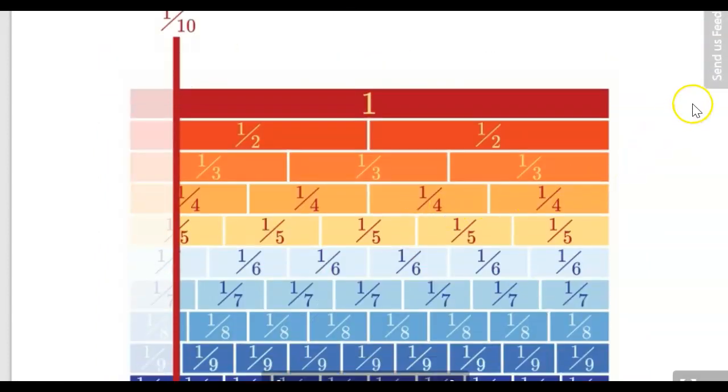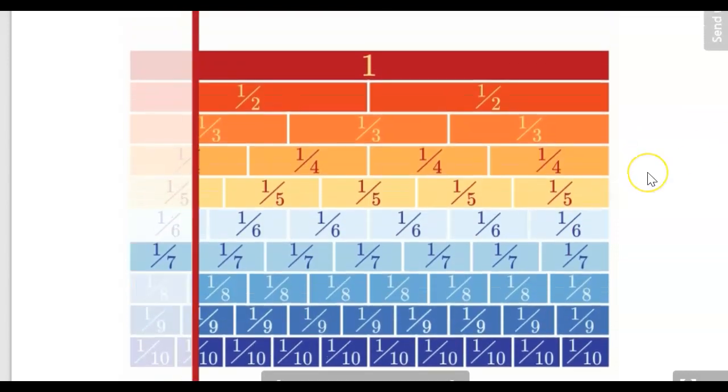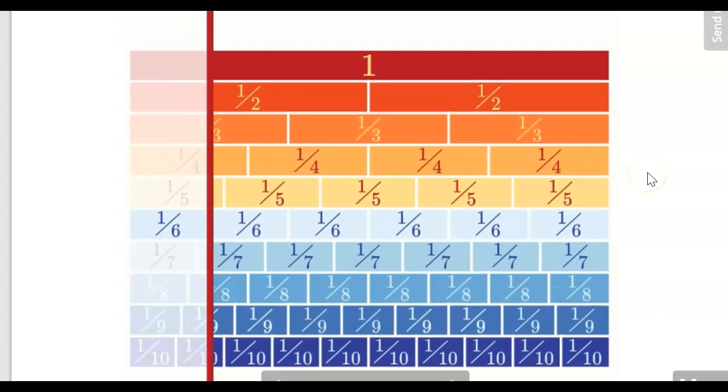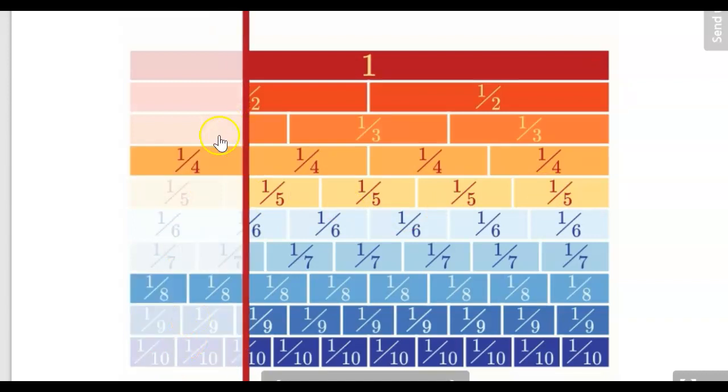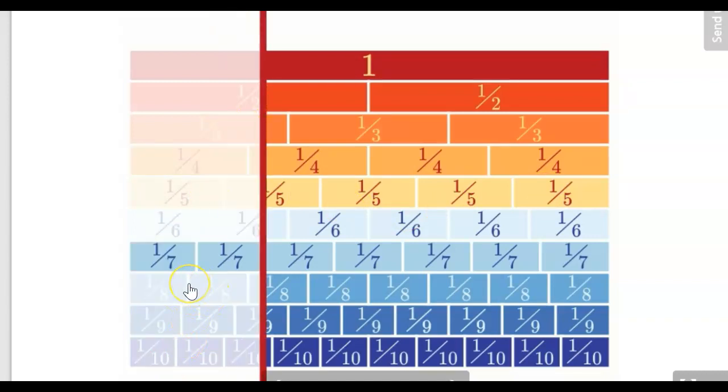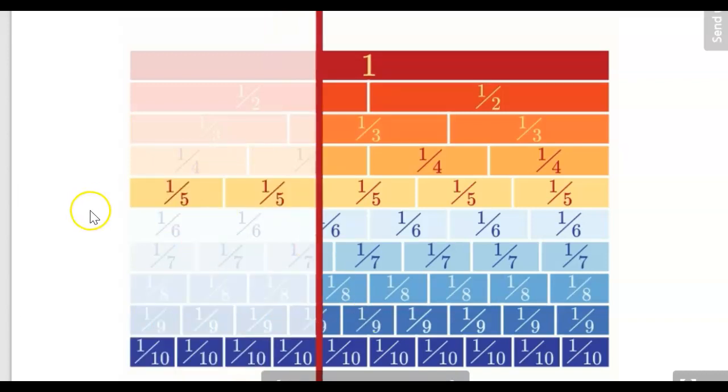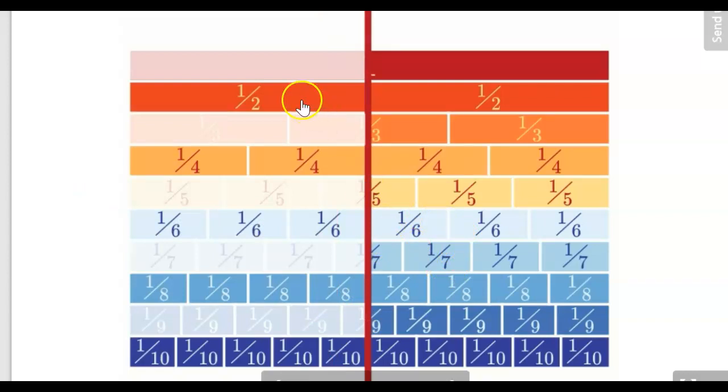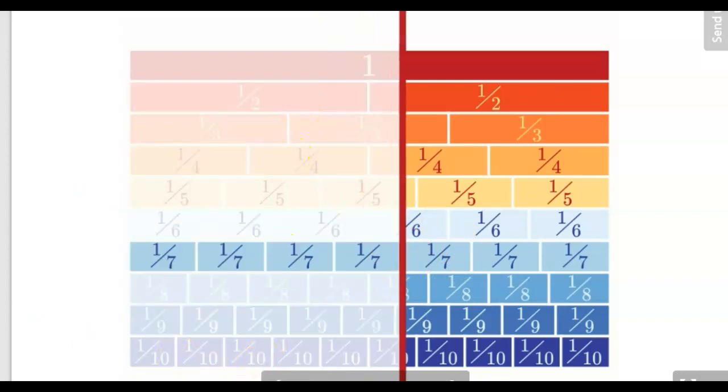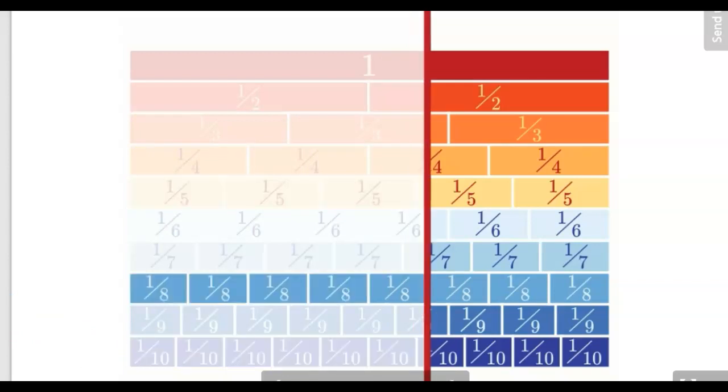If we have a look at this animation, that's one ninth. There's no equivalent fraction to one eighth or one seventh or one sixth. But when we get to one fifth, we can see it's equal to two tenths. We can see one quarter is equal to two eighths. We can see one third is equal to two sixths, which is equal to three ninths, and so on. This animation is quite useful to show us some equivalent fractions. We'll look more into equivalent fractions in coming lessons.